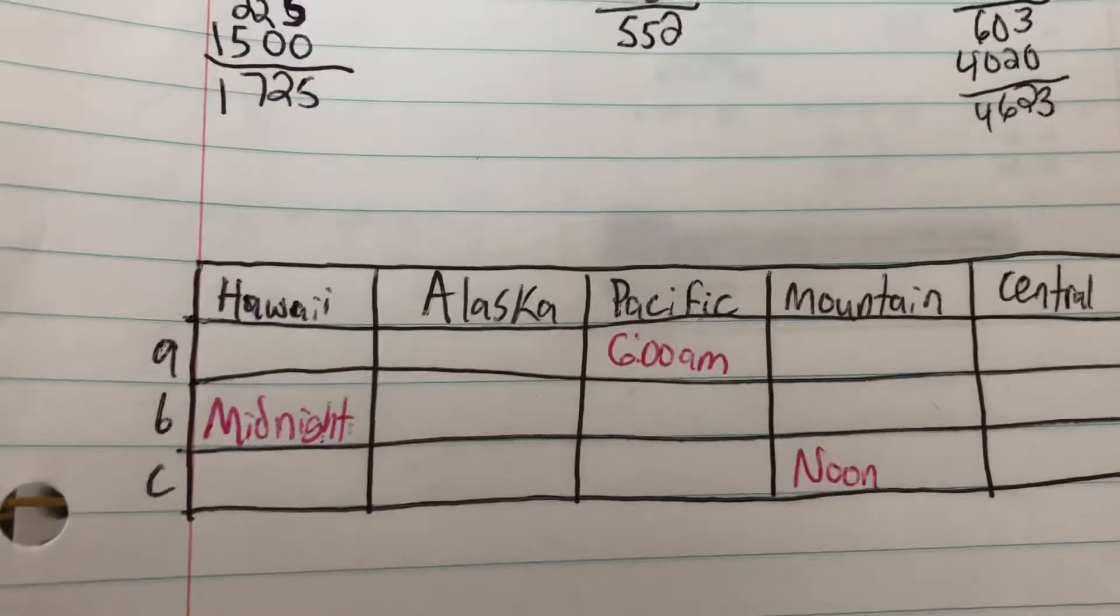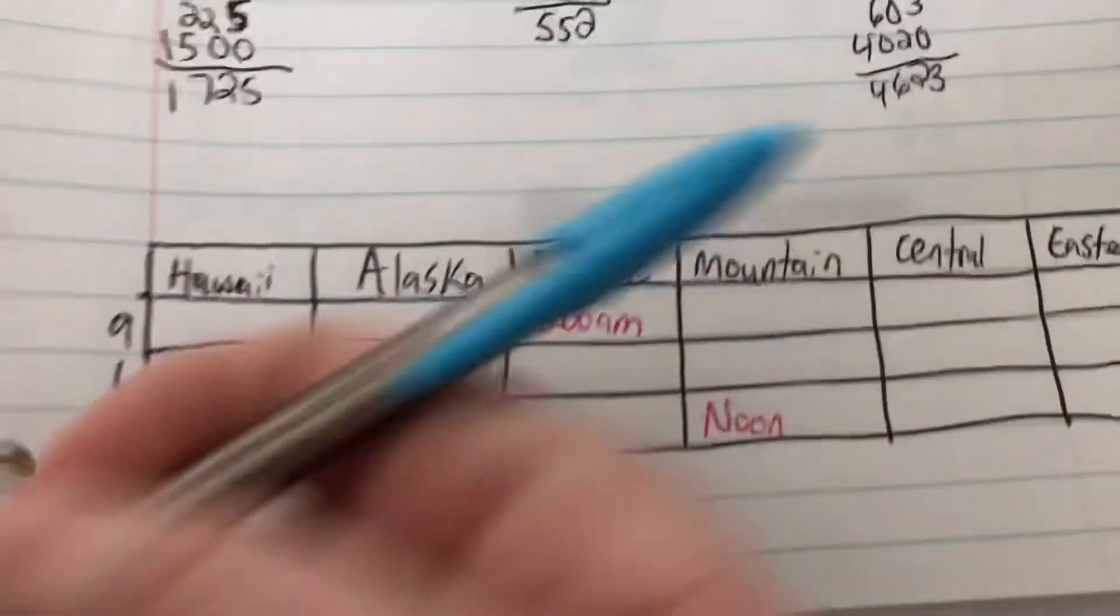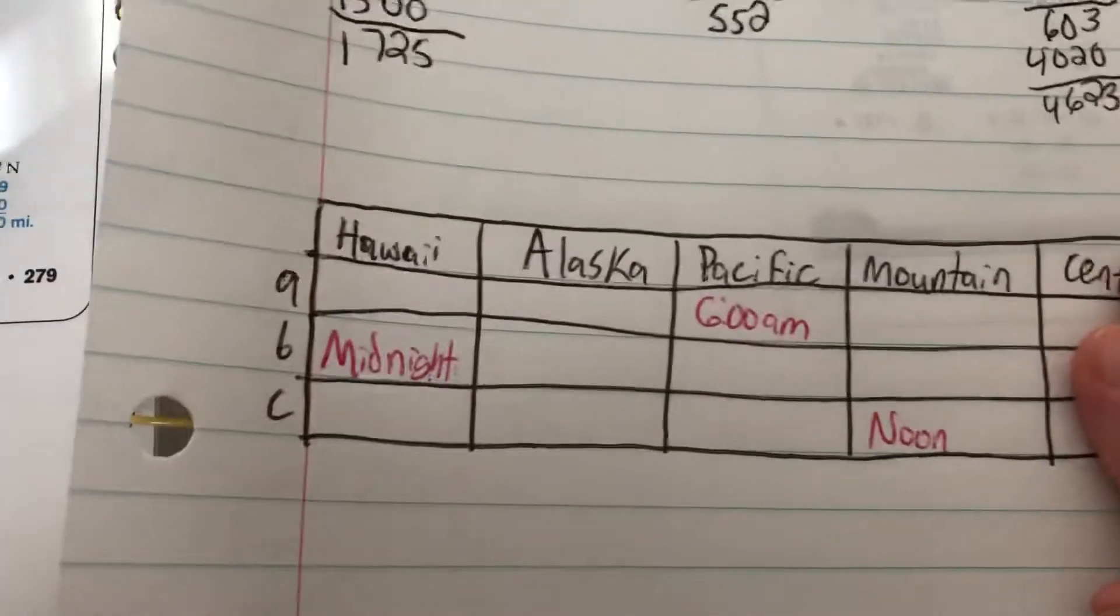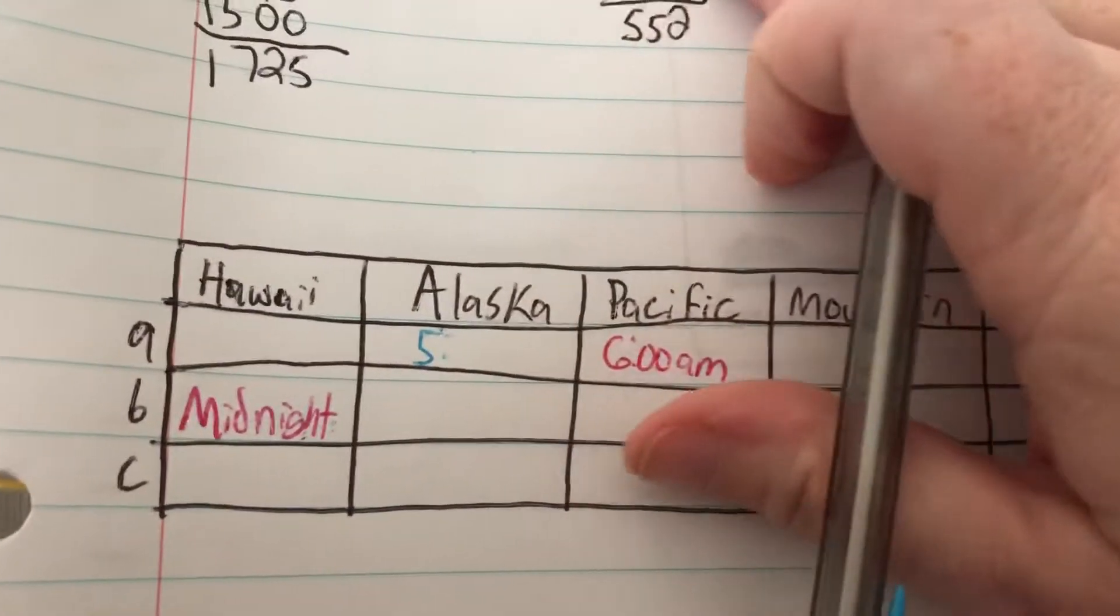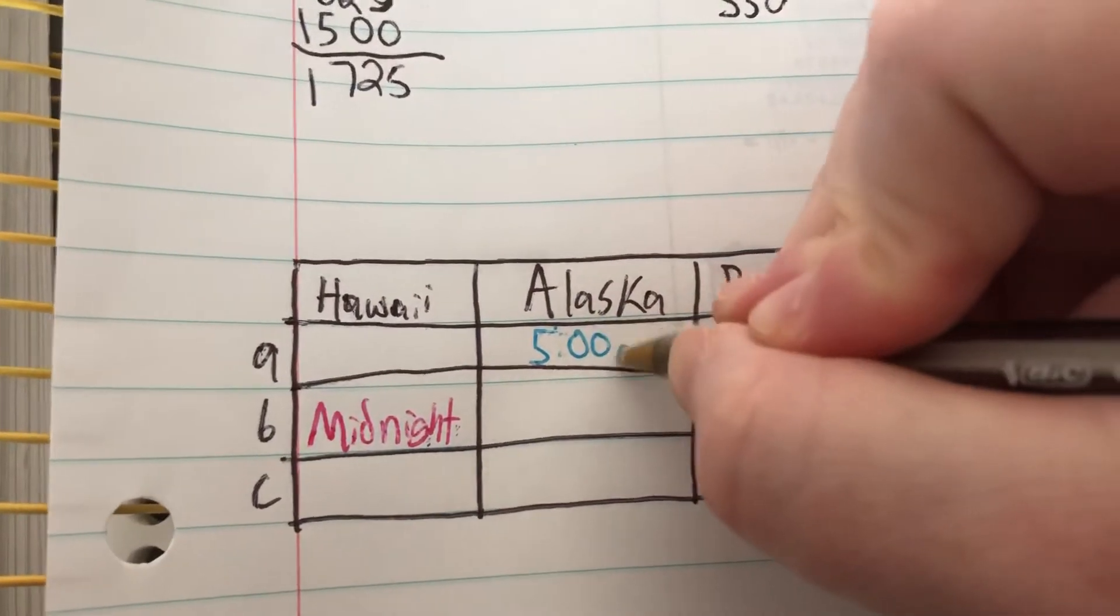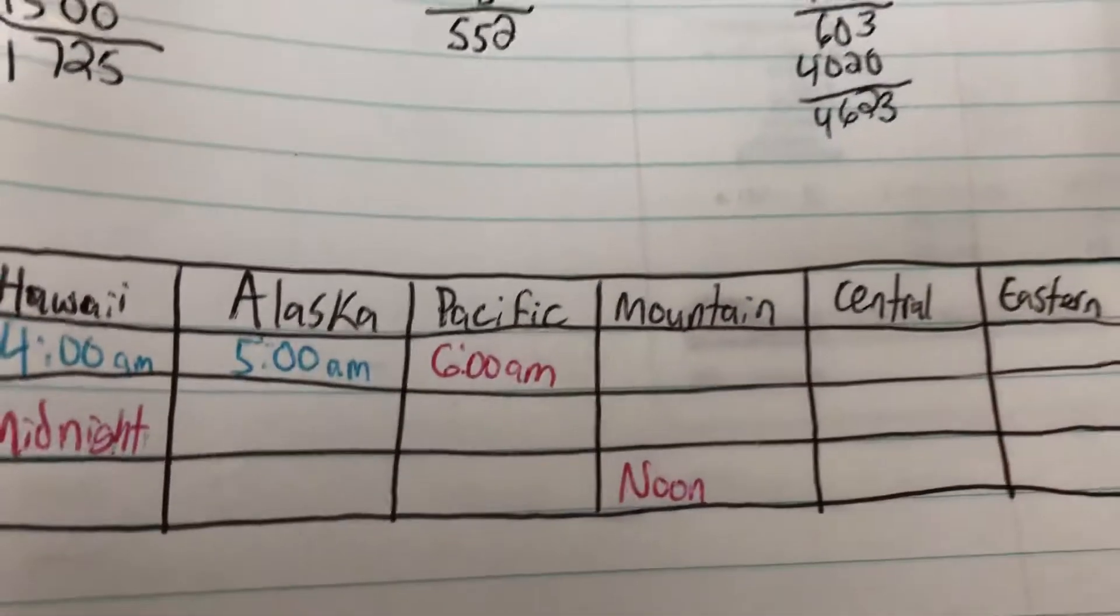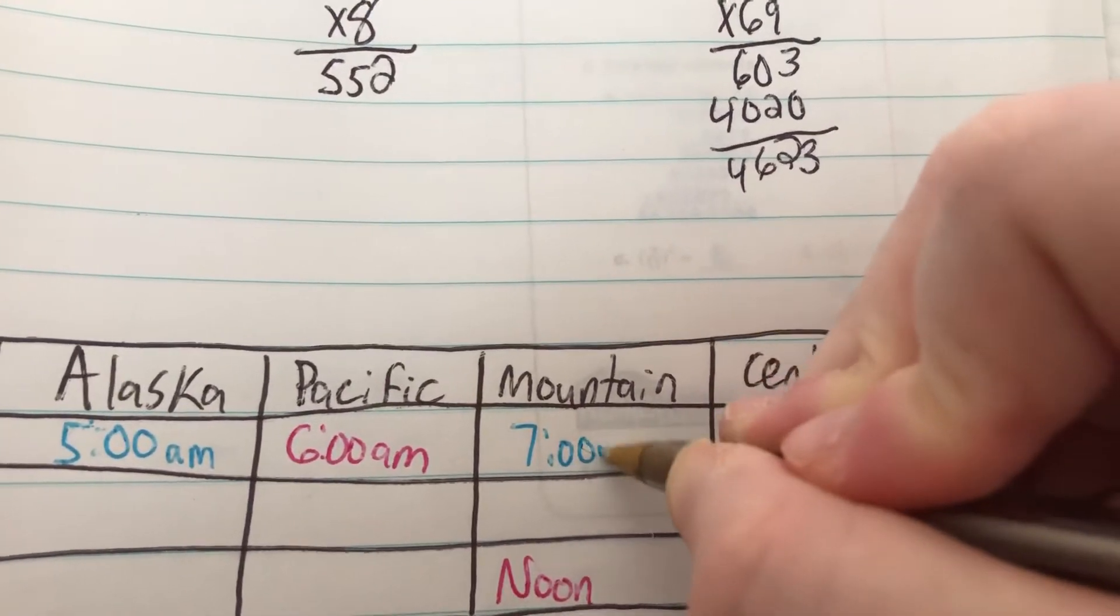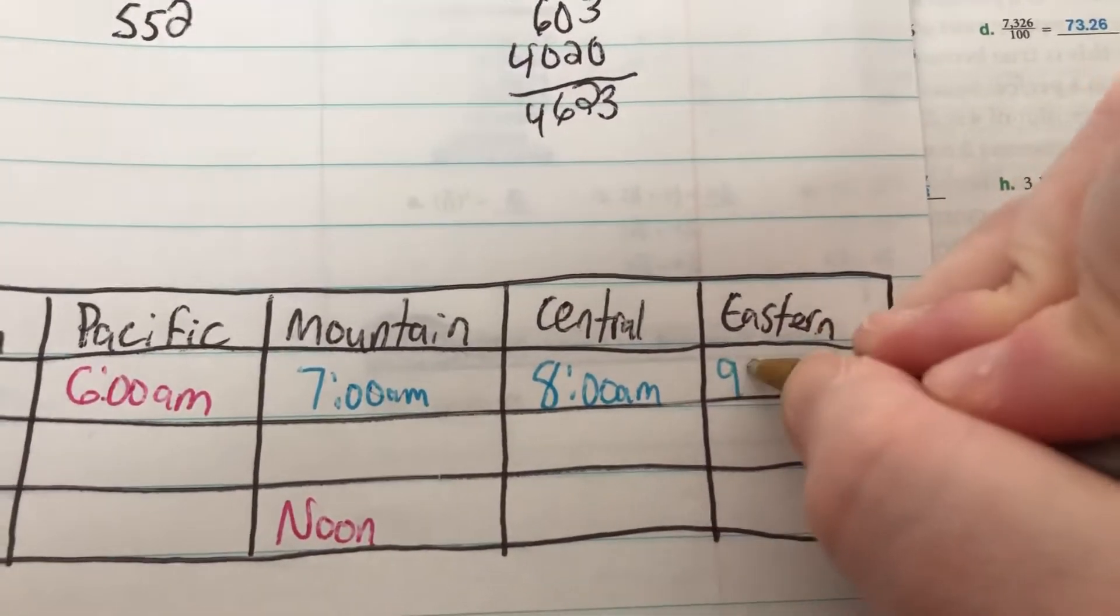Then it gives us one of those time zone charts again. For these remember if we are going to the right we are gaining an hour. If we're going to the left we're losing an hour. So if it is 6 a.m. Pacific time it is 5 a.m. in Alaska and 4 a.m. in Hawaii and the Aleutian Islands. Then going to the east we would have mountain time which would be 7 o'clock a.m., Central time would be 8 o'clock a.m., and eastern time which is where we are would be 9 o'clock a.m.